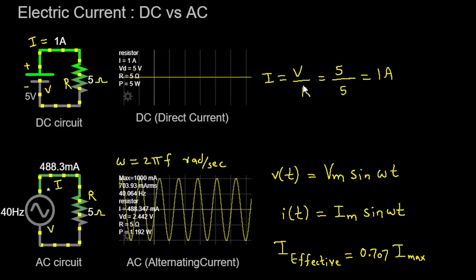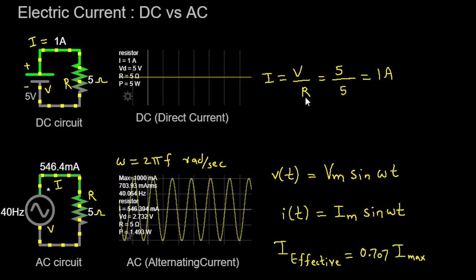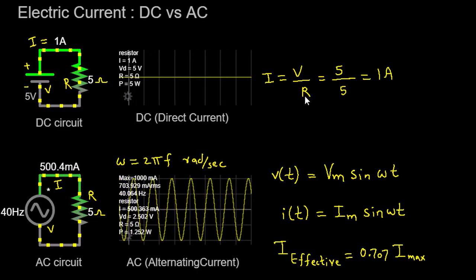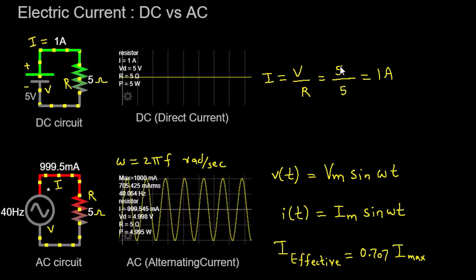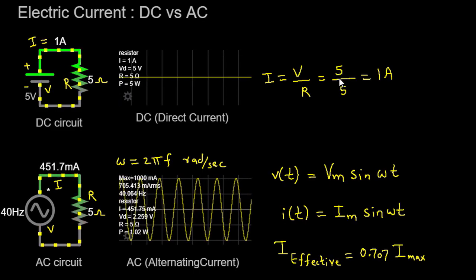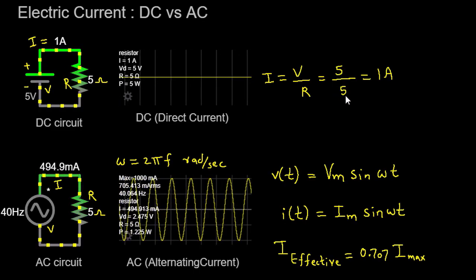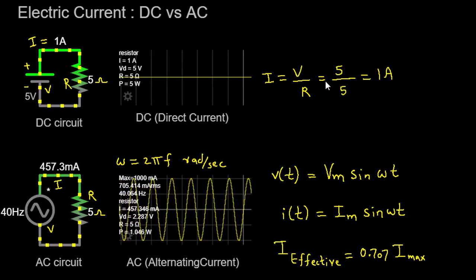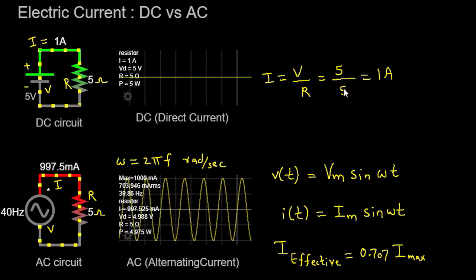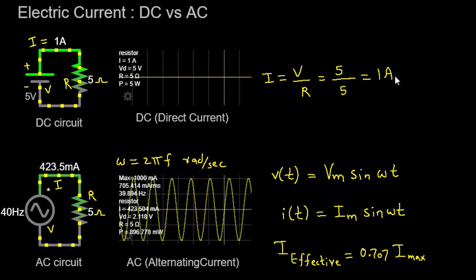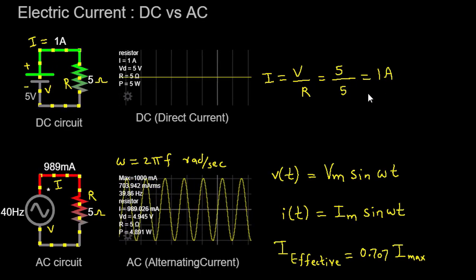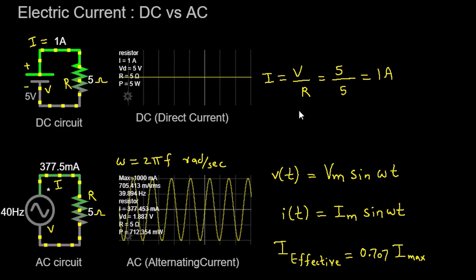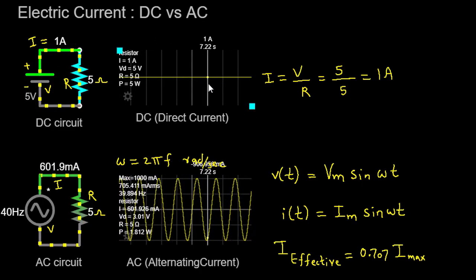Ohm's law states that the current (I) is equivalent to the voltage (V) divided by the resistance (R). In our case, with a 5-volt battery and a 5-ohm resistor, we can calculate the current as follows: I = V/R = 5/5 = 1 ampere (A). This means that a steady current of 1 ampere flows through the circuit.